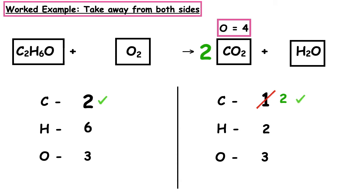How many hydrogens on the left? Six. On the right? Two. They don't balance. We multiply by three, putting a big 3 in front of the water. Two hydrogens inside the box times three gives six. How many oxygens inside the box? One — one times three is three.